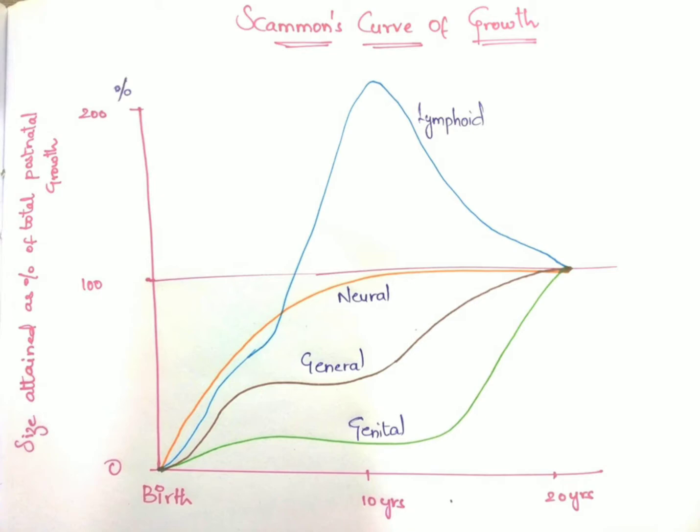Here is one x-axis and one y-axis. On the x-axis we are dividing the age like birth, 10 years, and 20 years. On the y-axis we have the size attained as a percentage of the total postnatal growth. The total postnatal growth is given in percentage: zero percent, hundred percent, and two hundred percent.